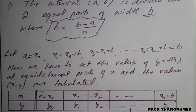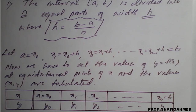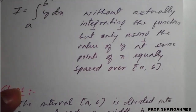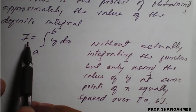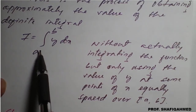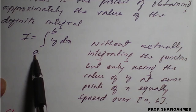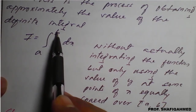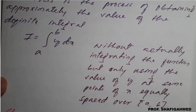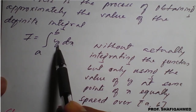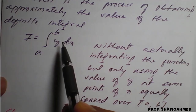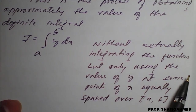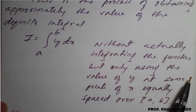How to apply this table for the respective rules we will see one by one in the next lecture. These are the introduction to numerical integration. The integral I equals the integral from a to b of y dx, where a and b are the lower and upper limits. We apply the values of x to get the respective results. The details will be seen in future classes.